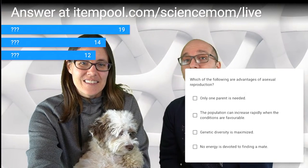It is poll time. Head over to itempool.com/sciencemom/live and let's see how much attention you've been paying. Our first question: which of the following are advantages of asexual reproduction? Only one parent is needed. The population can increase rapidly when the conditions are favorable. Genetic diversity is maximized. And no energy is devoted to finding a mate. Select only the advantages of asexual reproduction.